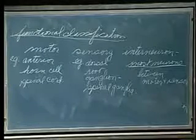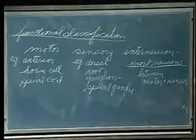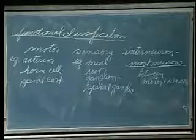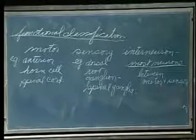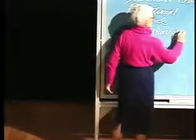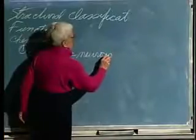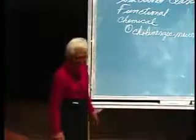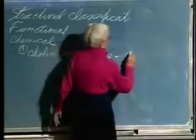So then we have chemical classification. There are so many chemicals associated with the nervous system now we can't begin to cover them all, so we'll just give you three examples. We have what are called cholinergic neurons. Those who've had this before — what's the transmitter? Acetylcholine, right.